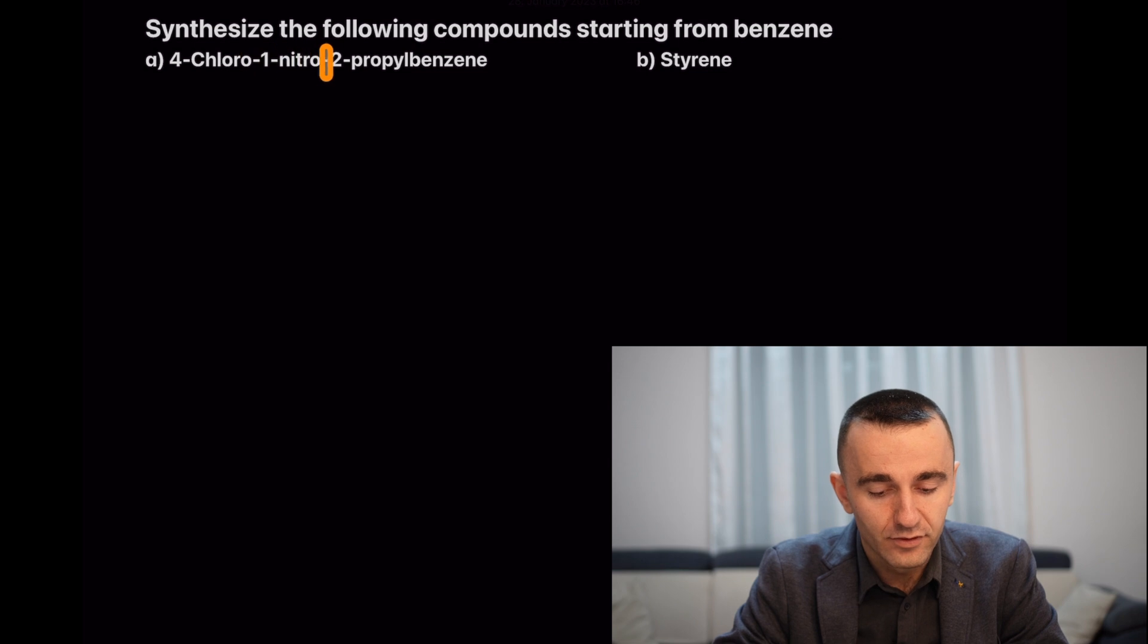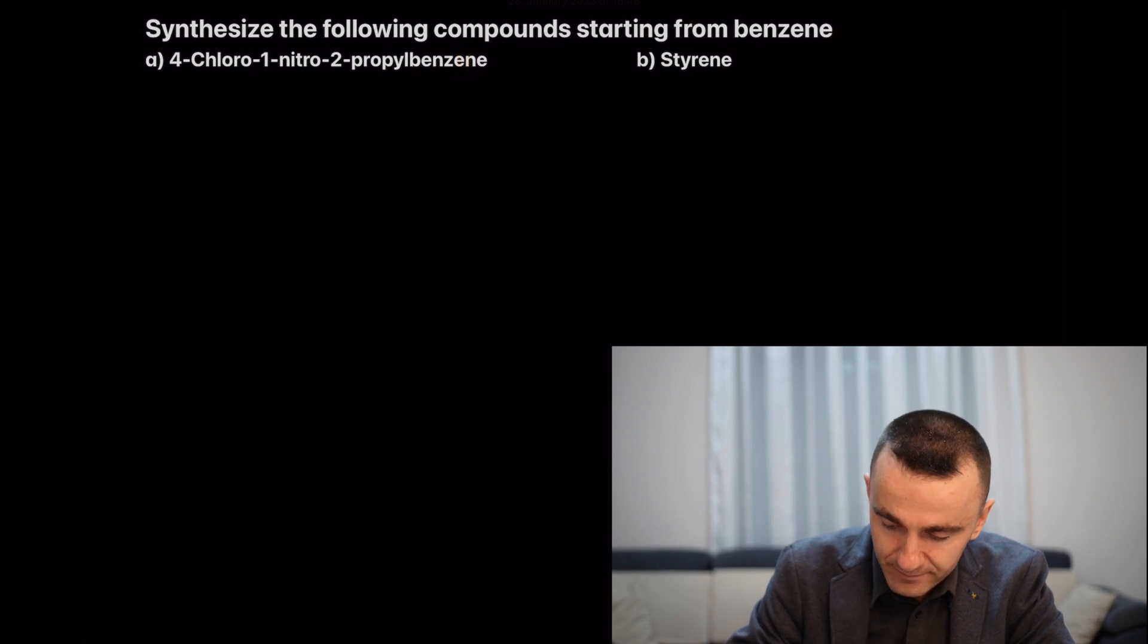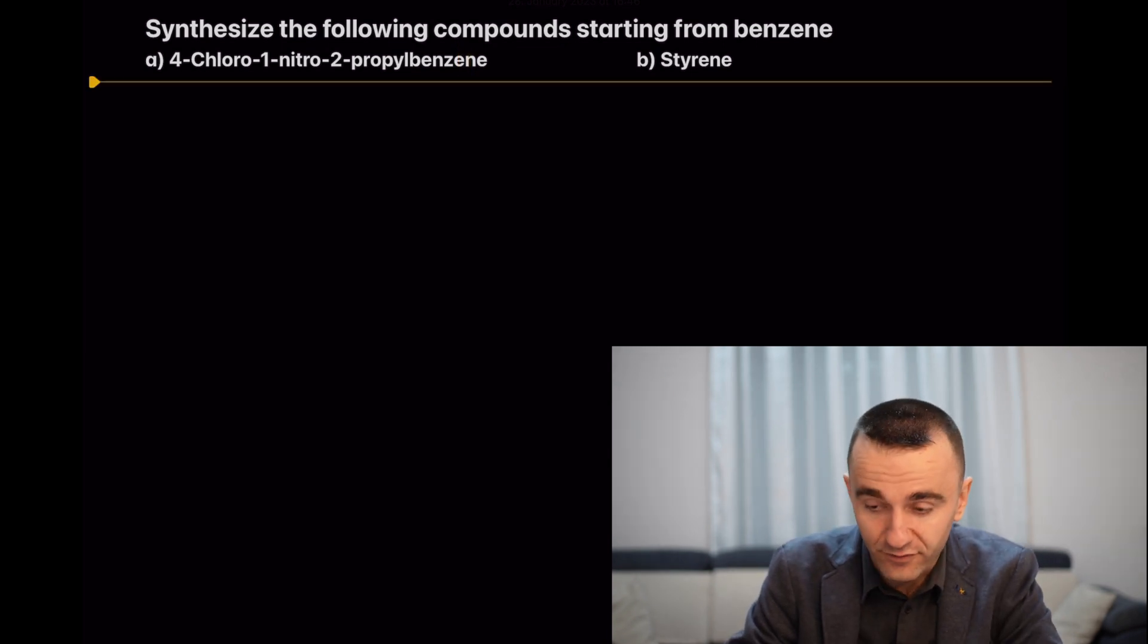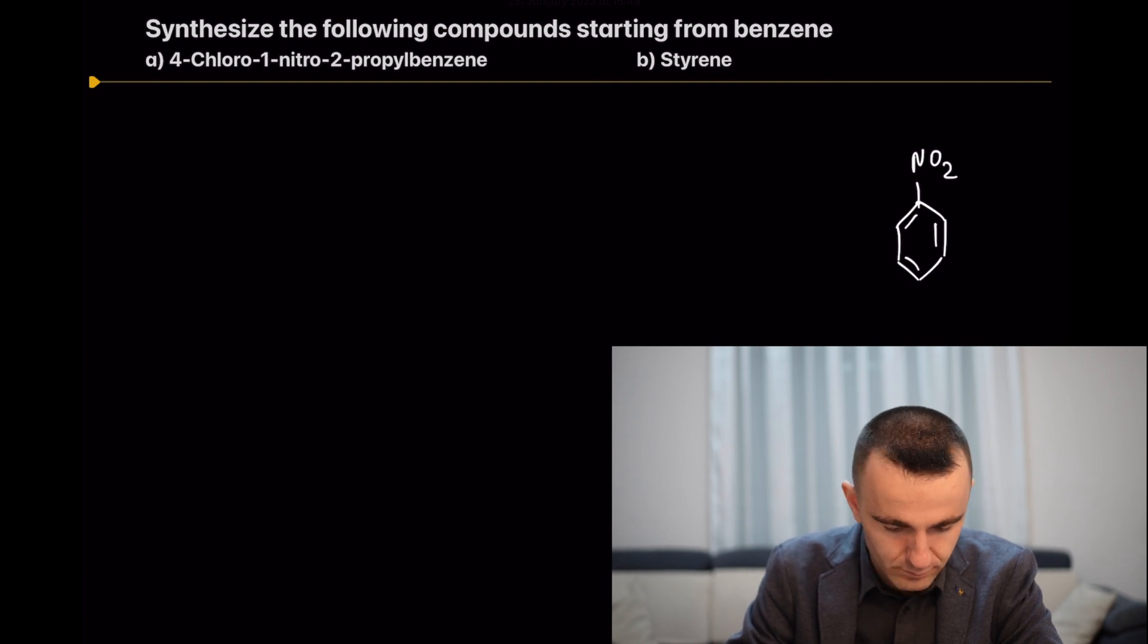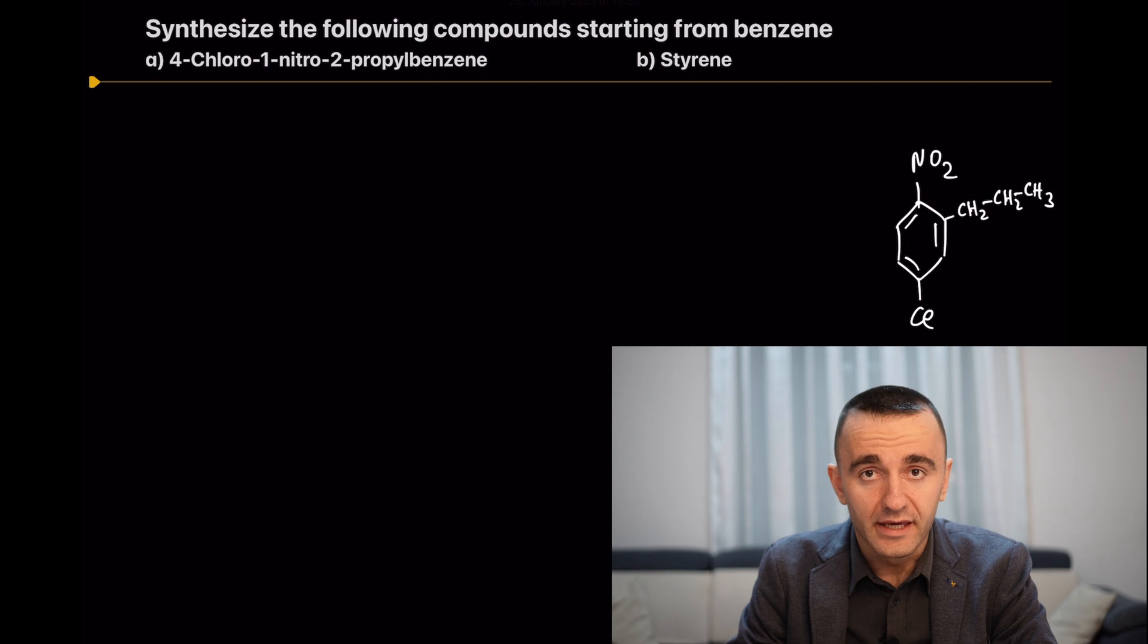Let's focus on the first compound: 4-chloro-1-nitro-2-propylbenzene. First, we have to write this compound. Let me write down the benzene ring on this side for a reason. This is the compound we're requested to synthesize starting from benzene.